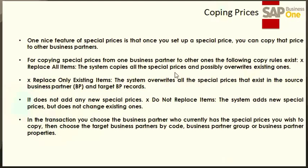'Replace only existing items' means the system will overwrite all the special prices that exist in both the source and target business partner records, but does not add any new special prices. 'Do not replace items' means the system adds new special prices but does not change the existing ones. In the transaction, you choose the business partner who currently has the special price you wish to copy, then choose the target business partner by code, business partner group, or business partner properties.